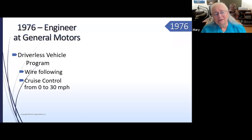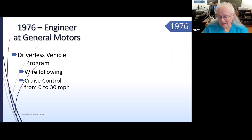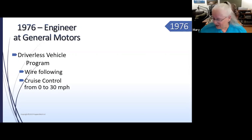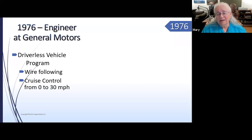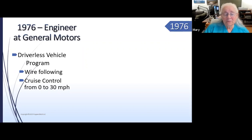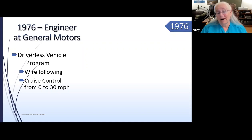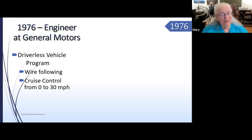In 1976, I was an engineer for a year at General Motors, hired into their driverless vehicle program. Yes, there was a driverless vehicle program at General Motors. In 1976, we were doing wire following — you put a wire down in a warehouse or between two airport terminals — and we had to do both wire following and cruise control. The problem was that cruise control between zero and 30 miles an hour had not yet been solved. They had bought a TI 990 mini computer that couldn't even do high-level languages. I could do assembly language too, so that wasn't a problem.